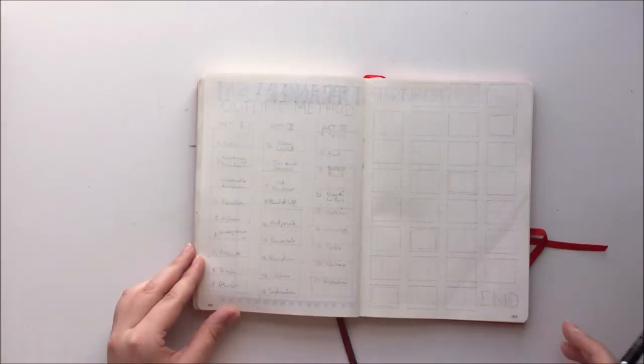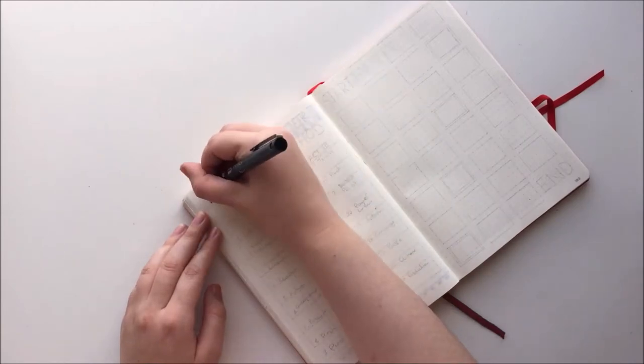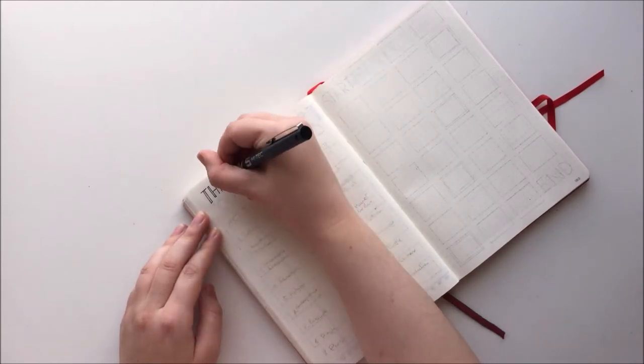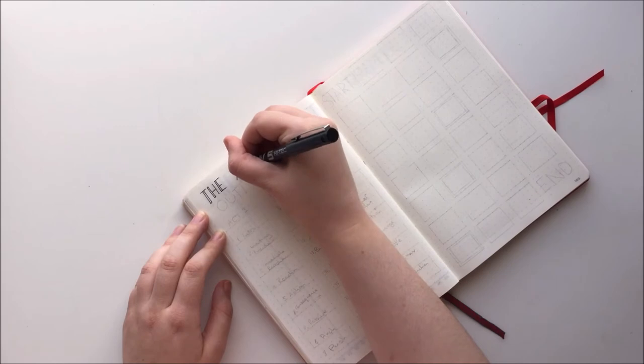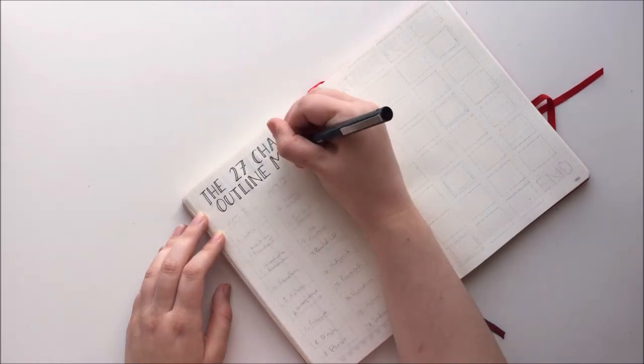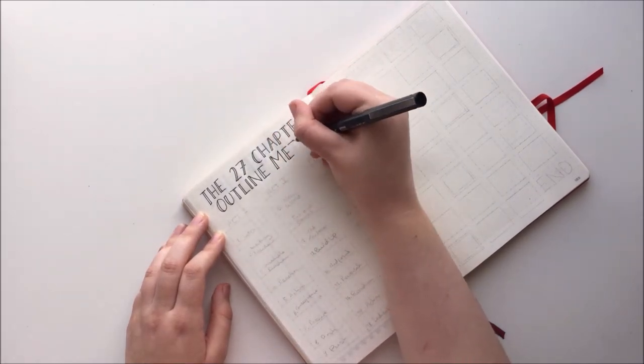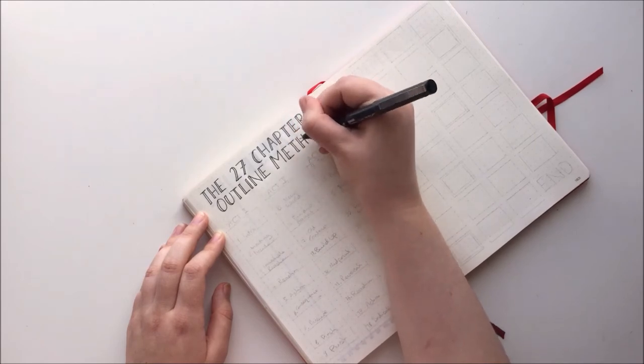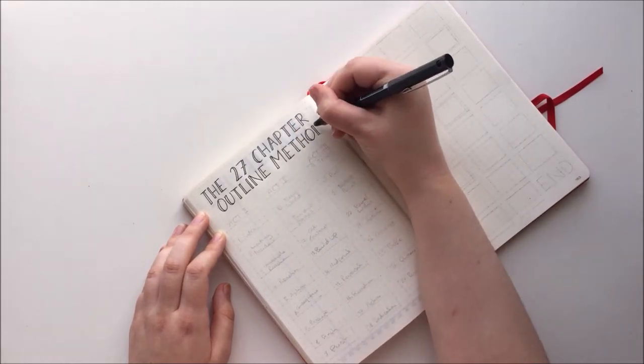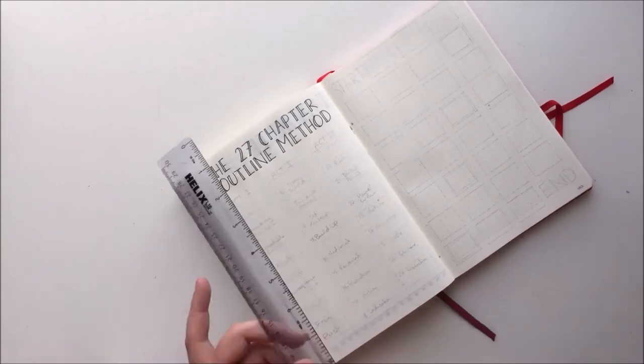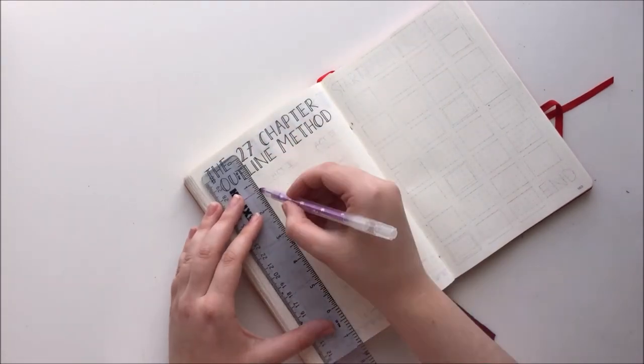These next two pages are new ideas I'm doing on my bullet journal for the very first time. Firstly, on this left page, I'm writing out a quick overview of the 27-chapter outline method. This is an outlining technique I first heard Kat at Cathy Tastic talk about, and it's the main one I've been using to help plan my story. I thought it would just be kind of fun to include in my bullet journal, so I've decided to dedicate this whole page to it.